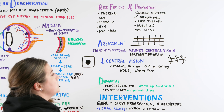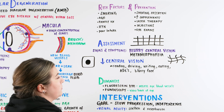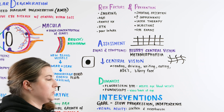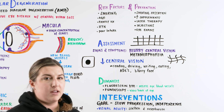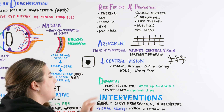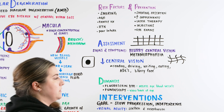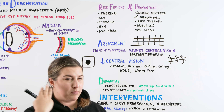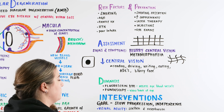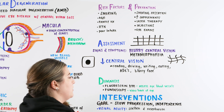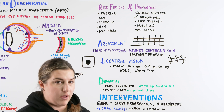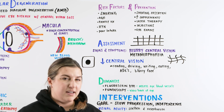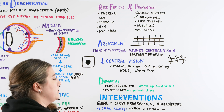When we suspect macular degeneration, we refer to the doctor for diagnosis. There are two main diagnostic approaches. First, fluorescein dye — we inject dye to view the blood vessels at the back of the eye, which tells us if they are leaking or have fluid coming from them. Second, fundoscopy — our ability to directly view the back of the eye to examine the retina, the macula, and the optic disc up close to assess what's going on and diagnose the type of macular degeneration.